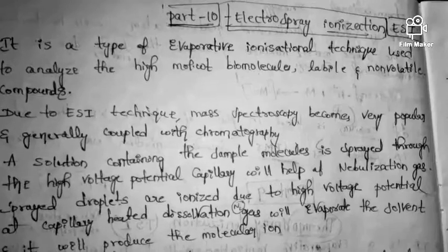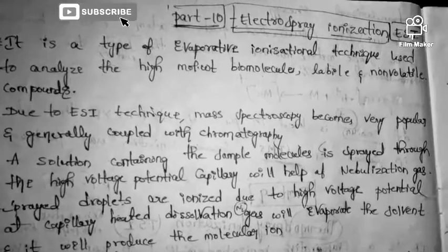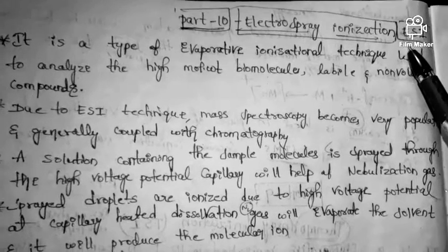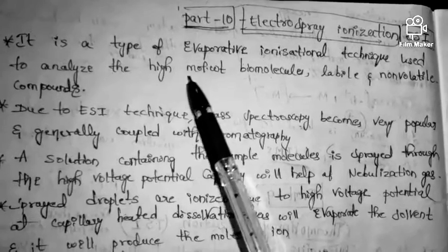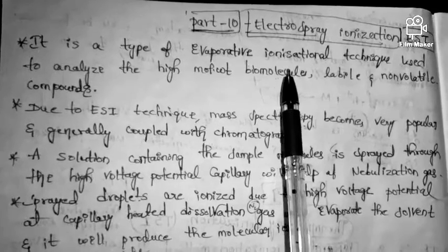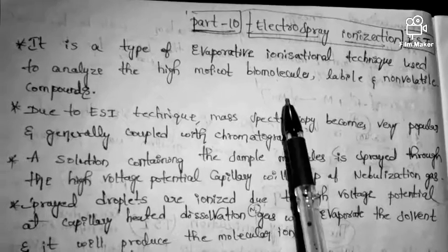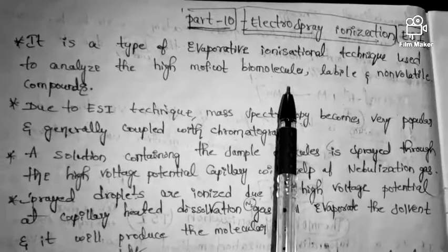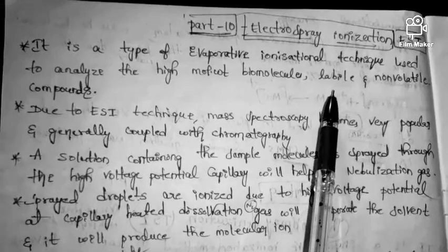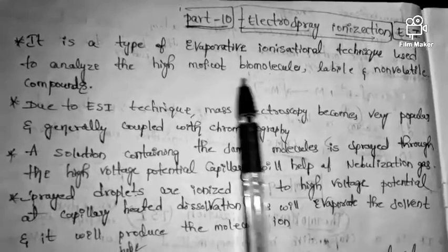Next, let us discuss electrospray ionization. It is also a type of evaporative ionization technique, and is used to analyze high molecular weight molecules having properties like lability — meaning the easiness of reacting — as well as labile and non-volatile compounds.